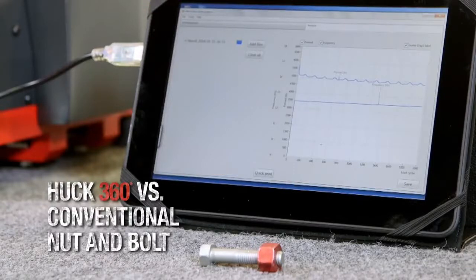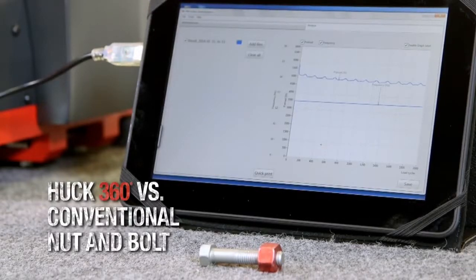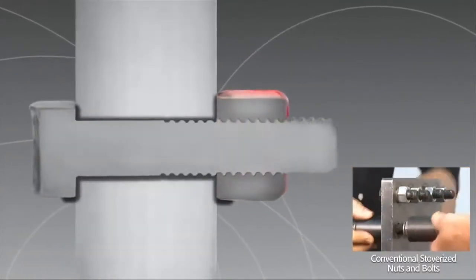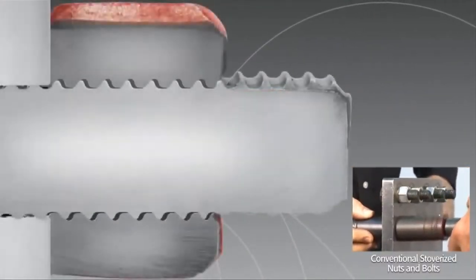The huck 360 also demonstrates superior clamp retention under transverse vibration due to the softer nut material that wraps around the crest of the bolt thread when installed.